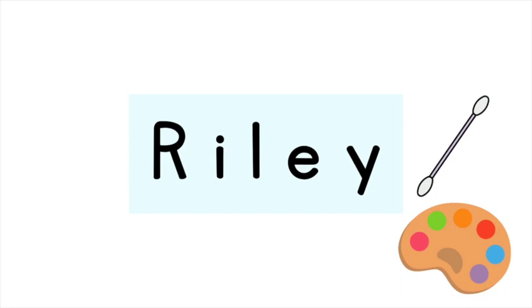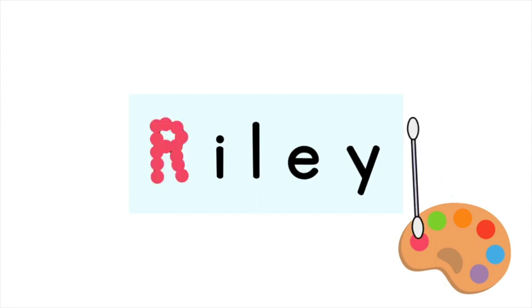This next activity requires a strip with your child's name on it, q-tips and washable paint. What you do is you have your child choose a color they would like to use to dot their name and let them dot each letter of their name, either in the same color or a different color, it's completely up to them.